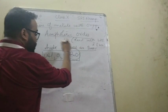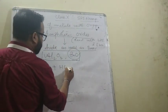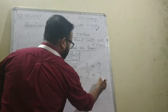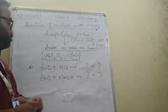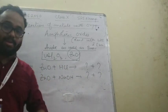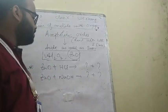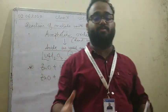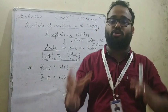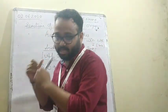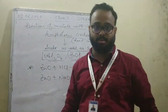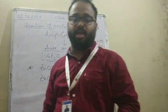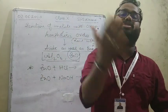Similarly, ZnO is also an amphoteric oxide — so as an assignment, tell me what the reactions of ZnO with acid and base will be. These kinds of oxides react with both acid and base. Today we learned about metallic oxides: metal plus oxygen gives metallic oxide, non-metal plus oxygen gives non-metallic oxide. Metallic oxides are basic, non-metallic oxides are acidic, and some oxides like Al₂O₃ are amphoteric. With this we finish reaction of metals with oxygen; next week we will start reaction of metals with water.